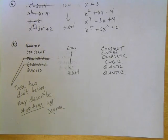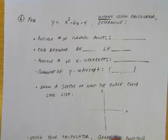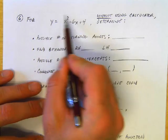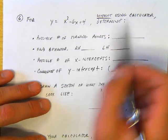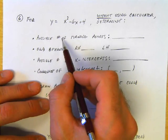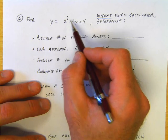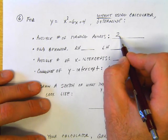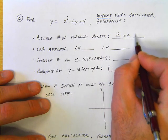Let's look at number 6. We have this polynomial, and without a calculator, determine the possible number of turning points. The degree is 3, so there could be 2 turning points or 0. The end behaviors: the lead coefficient is positive, so the right hand is up. The degree is odd, so the left hand is down.